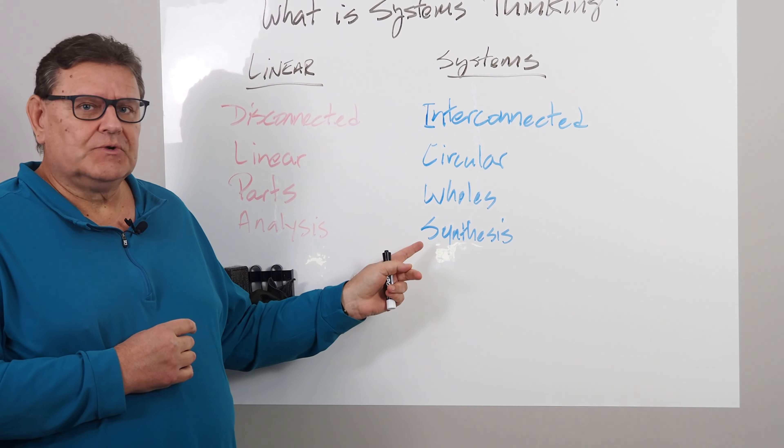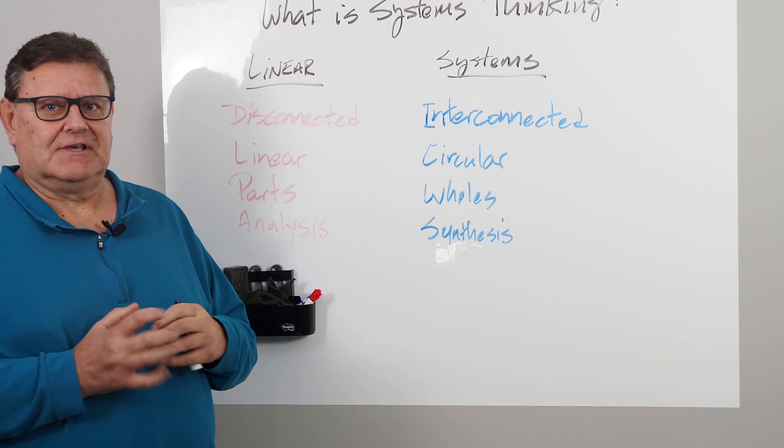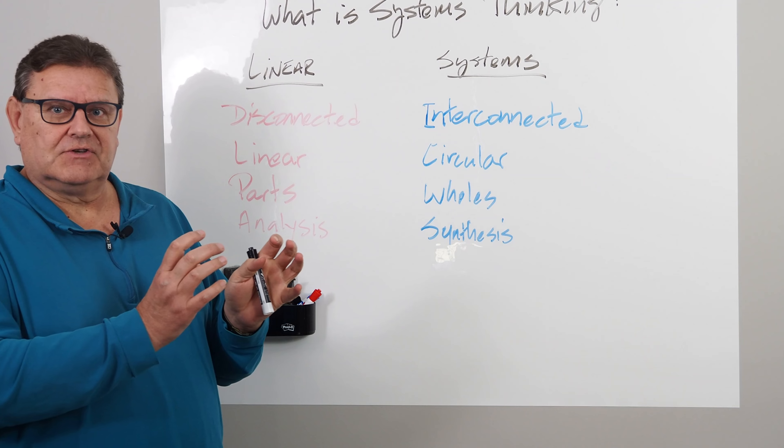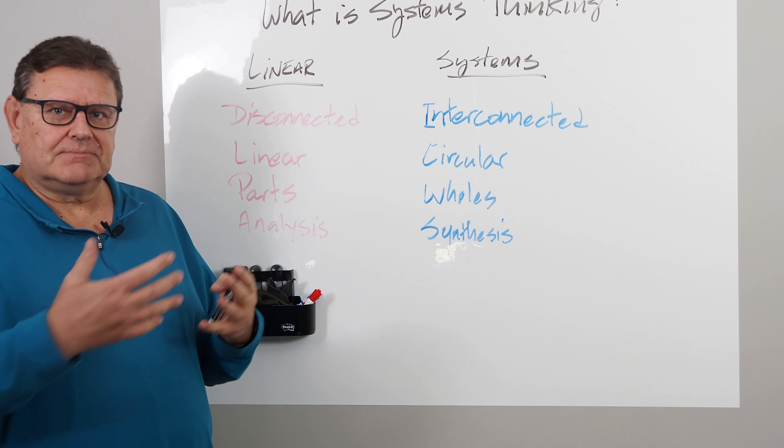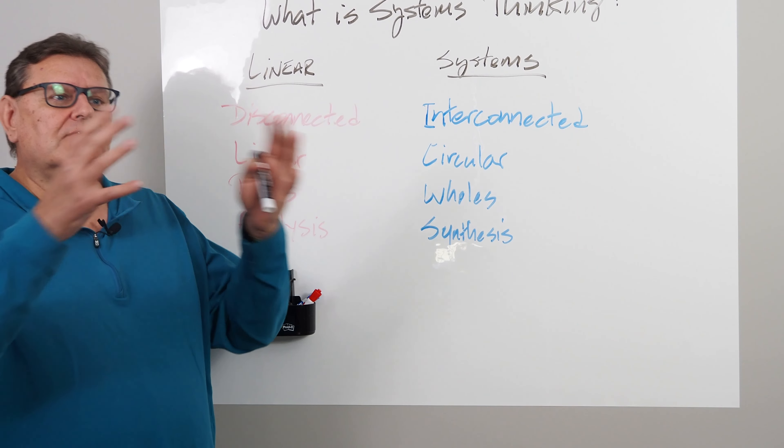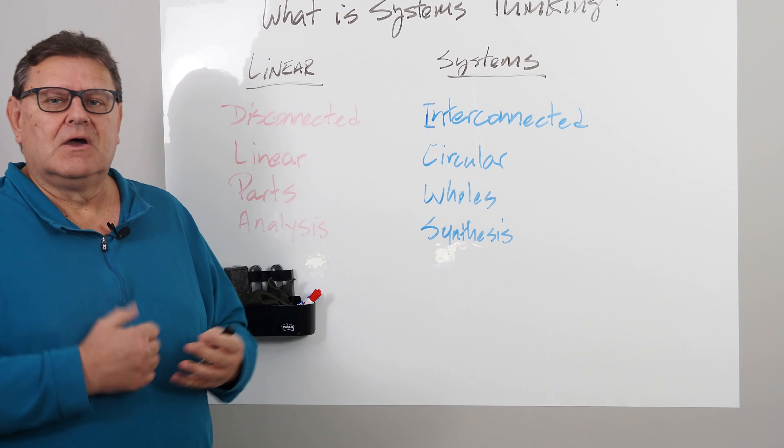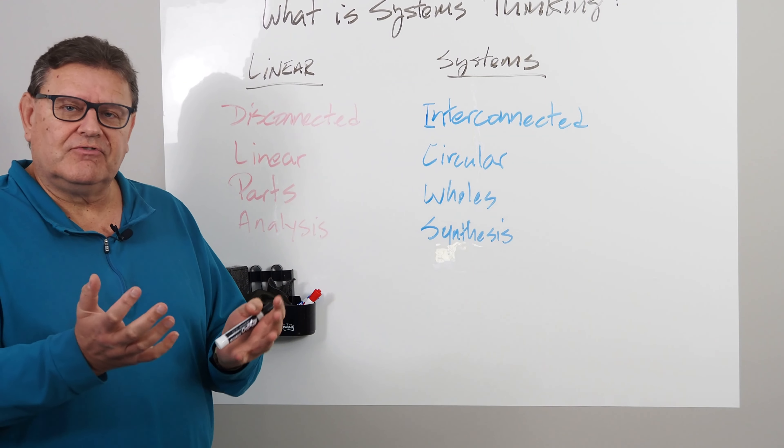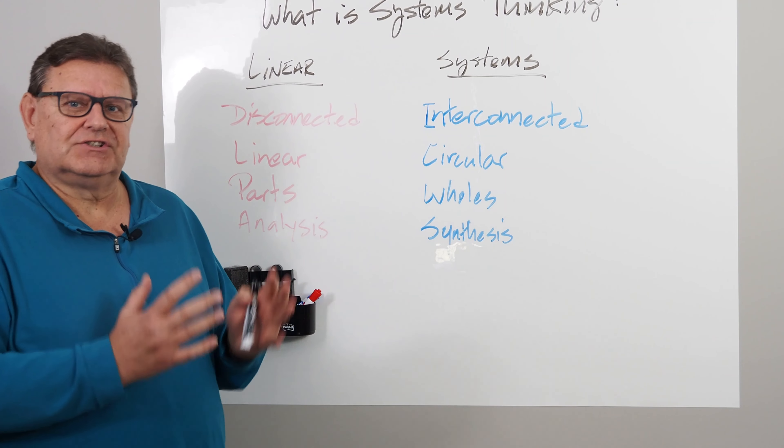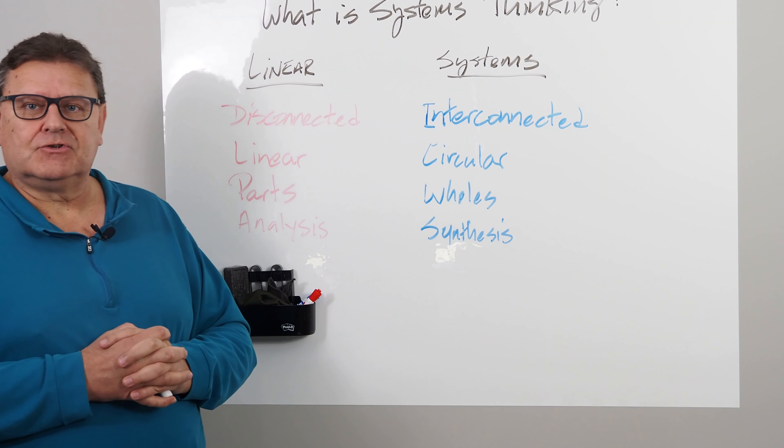System thinking is really about synthesis. It recognizes components, but it's about the relationships between the components. How do all of these parts of a system interact and interdepend on one another in order to provide the system its function, its purpose, to accomplish what it is designed to do.